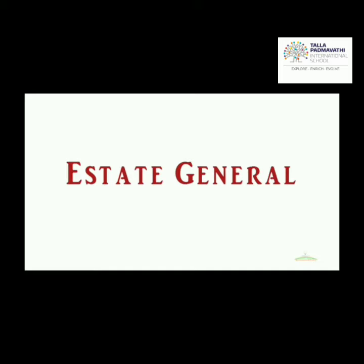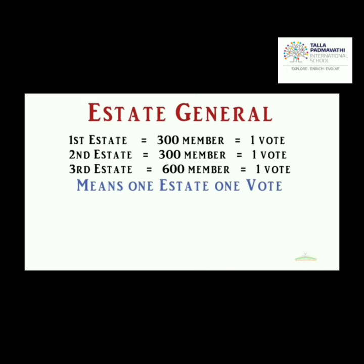Each member of the estates is given a single vote — that is, each estate as a whole has the power of one vote. All 300 members together can give only one vote. As you can see in the image: first estate, 300 members, one vote; second estate, 300 members, one vote; and the third estate, 600 members, with one vote. Overall, one estate has the power to give only one vote.